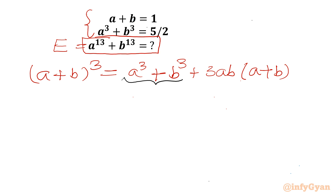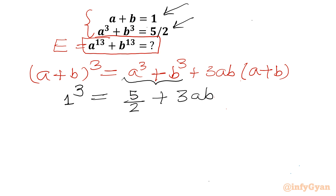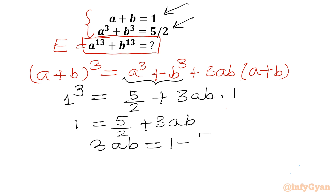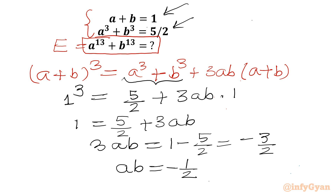So I will write a plus b whole cube: 1 cube from equation 1, equal to a cube plus b cube, which is 5 over 2 from equation 2, plus 3ab times a plus b, which is 1. So 1 equals 5 over 2 plus 3ab. Therefore 3ab equals 1 minus 5 over 2, which is minus 3 over 2. So ab equals minus 1 over 2. This is one very important result.